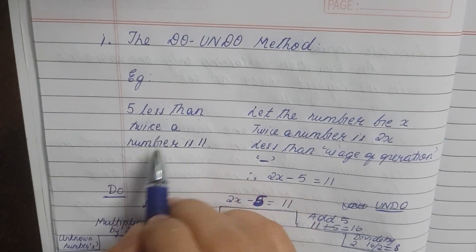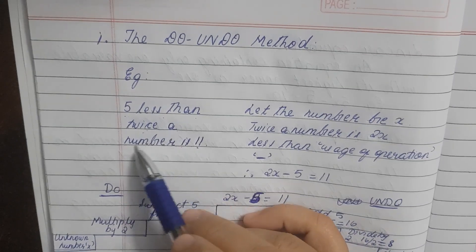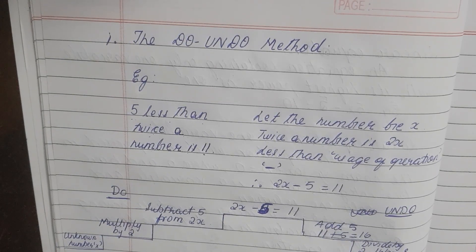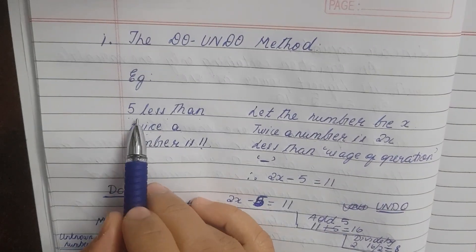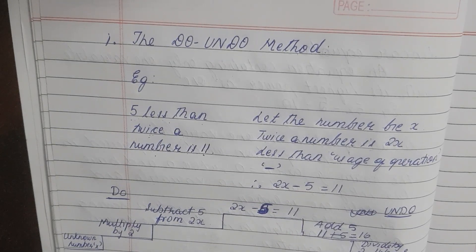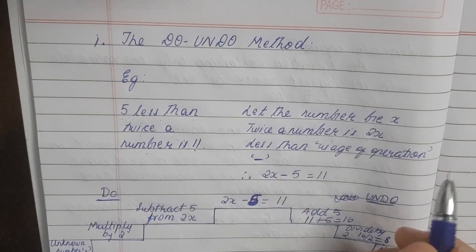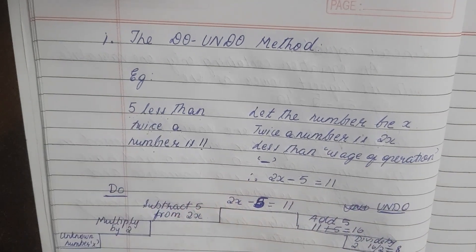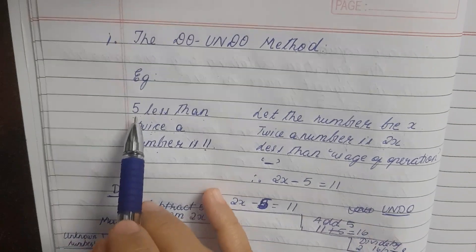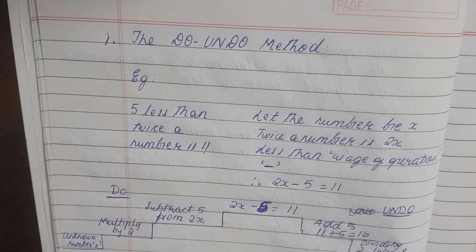Now let's look at an example question. '5 less than twice a number is 11.' Here, 'a number' is what we don't know, so we take it as the variable x. Twice a number means 2 into x, which is 2x. 5 less than twice a number means we subtract 5 from 2x. So the equation is 2x minus 5 equals 11. The solution method we use here is called the do and undo method.